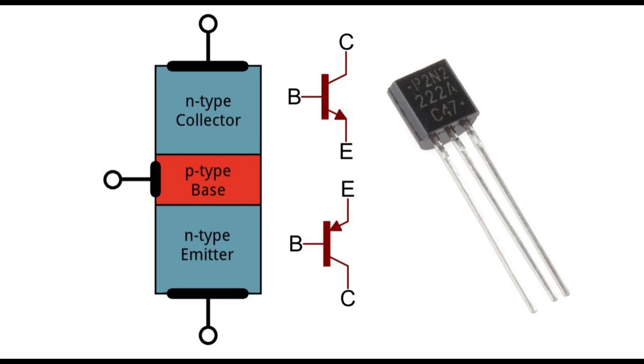BJTs exist as PNP and NPN types based on the doping types of the three main terminal regions. An NPN transistor comprises two semiconductor junctions that share a thin P-doped region, and a PNP transistor comprises of two semiconductor junctions that share a thin N-doped region.